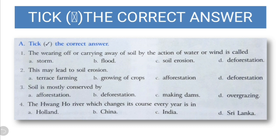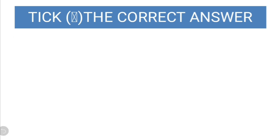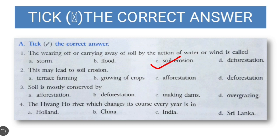Now let us solve some objective type questions. The wearing or carrying away of soil by the action of water or wind is called: storm, flood, soil erosion, or deforestation? The answer is soil erosion. Second question: which of these may lead to soil erosion — terrace farming, growing of crops, afforestation, or deforestation? The answer is D, deforestation.